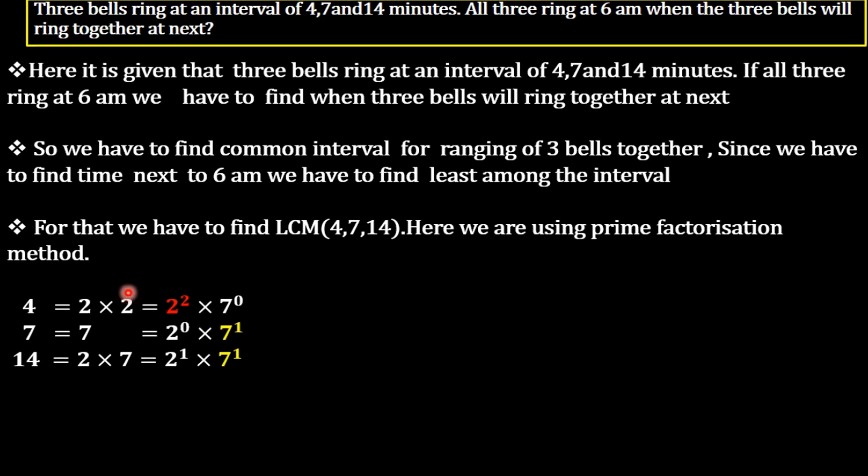We are rewriting 4 in terms of 2 and 7 for using our prime factorization method. Here there is no 7 term, so we are putting 7 raised to 0. Here there is no 2 term, so we are putting 2 raised to 0.